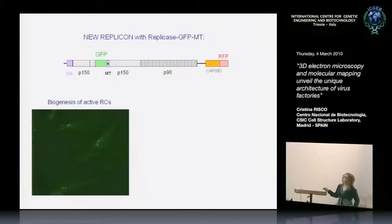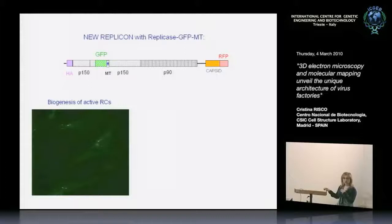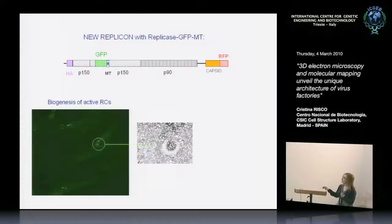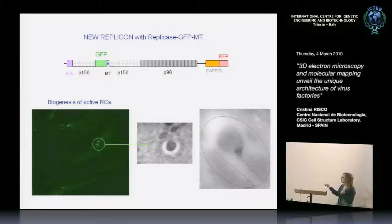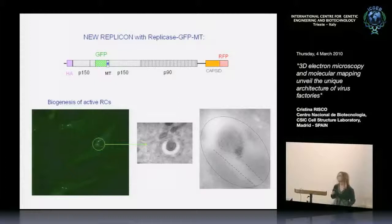We are also moving to a replicon with GFP and MT for correlative microscopy. Our idea is to find the earliest structure we can visualize in a live cell, doing correlative microscopy, then study how the CPV and the whole factory is organizing, and then analyze how the molecules are forming a functional factory. This is what we are trying to do.